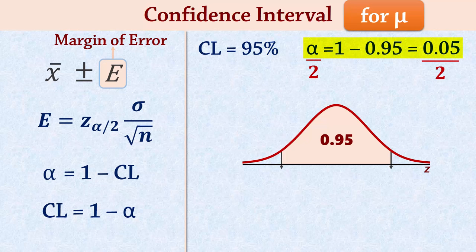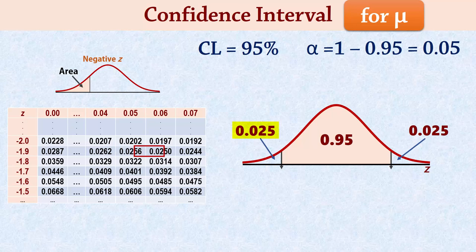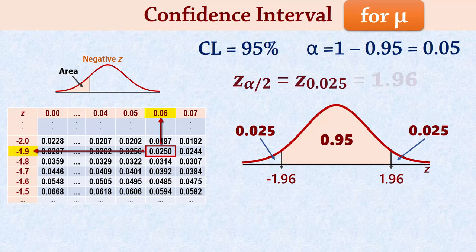From the less than cumulative standard normal tables, 0.025 in the left tail corresponds to a Z value of negative 1.96. And due to symmetry, it will be positive 1.96 for the right tail. So the Z critical value corresponding to the 95% confidence level, which we write as Z.025, is 1.96.